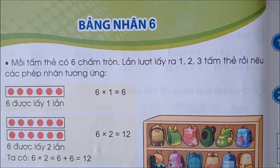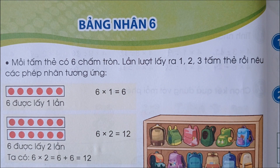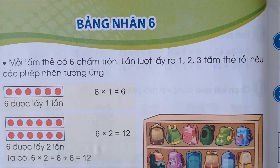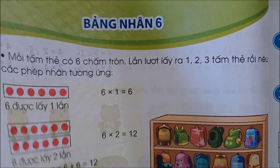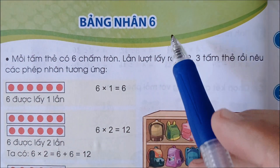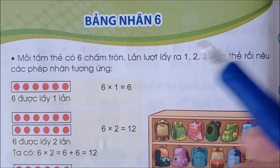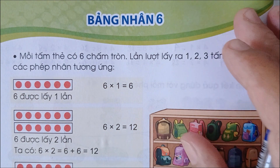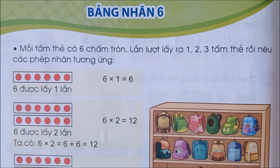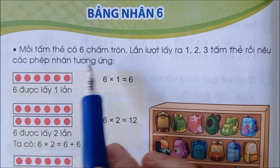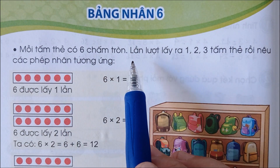Xin chào tất cả các con học sinh lớp 3 thân mến. Hôm nay chúng ta sẽ học bài bảng nhân 6 trong sách giáo khoa toán lớp 3 cánh diều nha các con. Ta đi vào bài học: mỗi tấm thẻ có 6 chấm tròn.